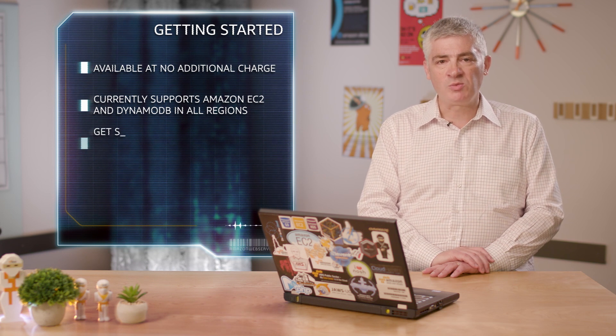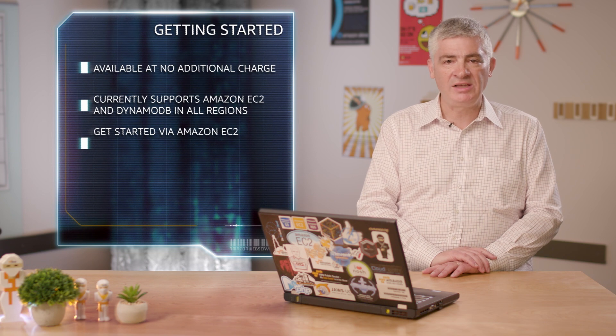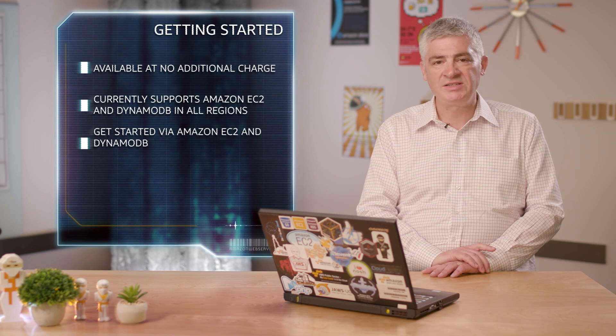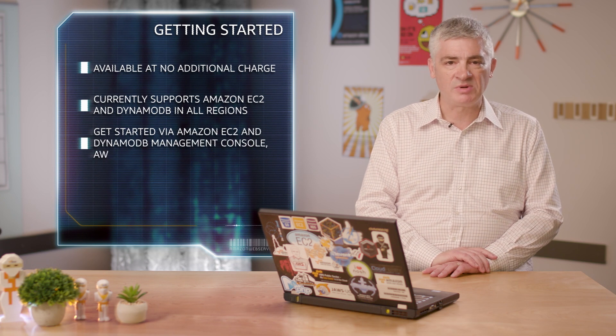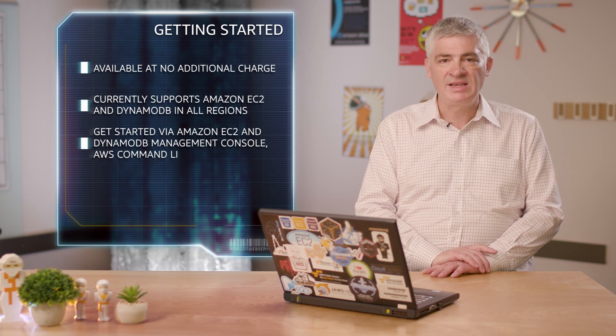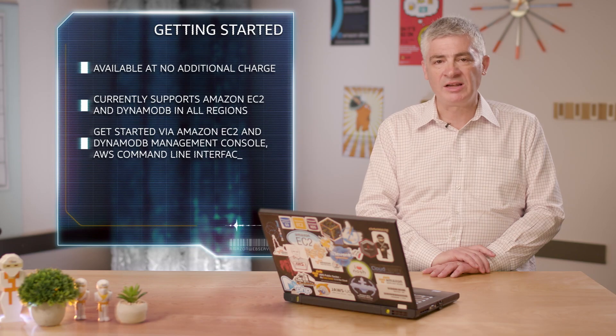You can get started with target tracking policies for auto scaling using the Amazon EC2 and Amazon DynamoDB management consoles, AWS command line interface, or API. To learn more, see my blog post: introducing target tracking policies for auto scaling. Thanks for watching.